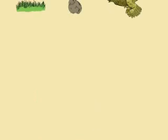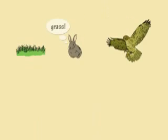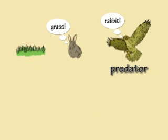Similarly, a rabbit eats grass and a hawk eats rabbits, so the hawk is a predator and the rabbit is its prey.